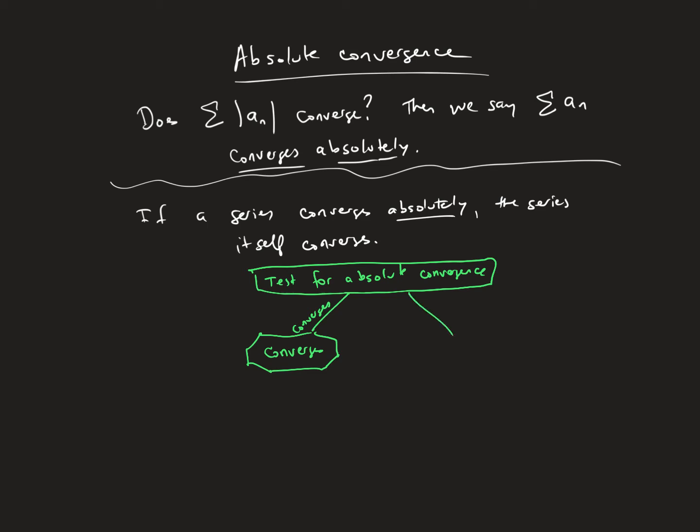Now, if the absolute values diverge, this leads us to something a little bit different. And what it leads us to is we can test the series itself. Now, if the series itself converges, we call that conditional convergence. So conditional convergence is when the series diverges absolutely, but converges in and of itself.